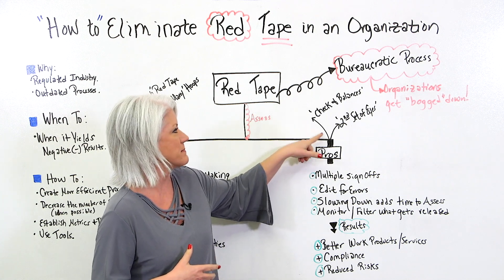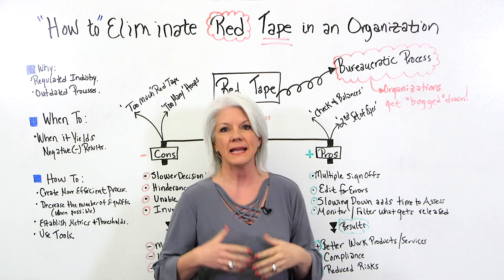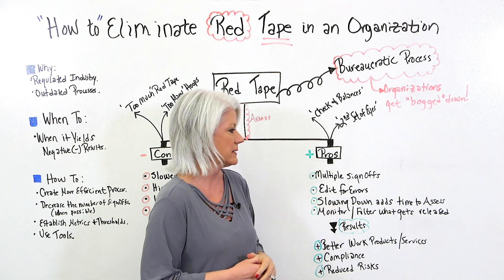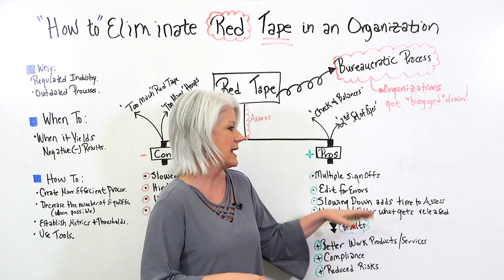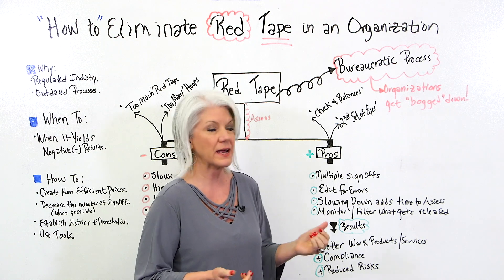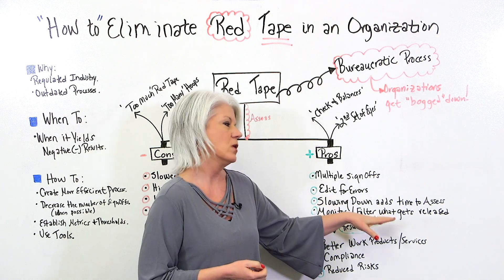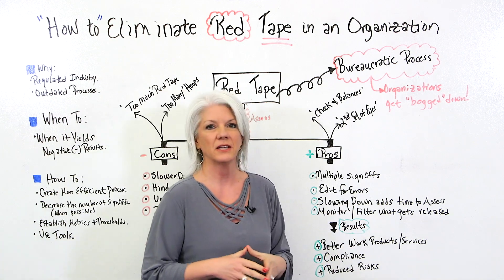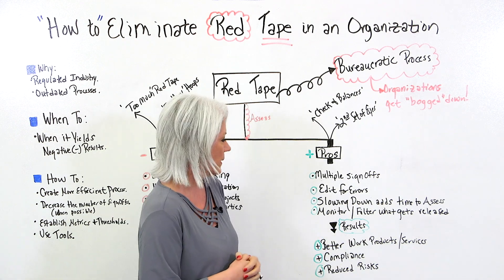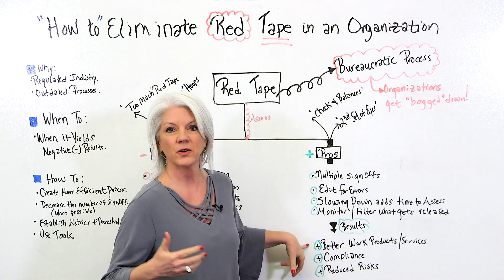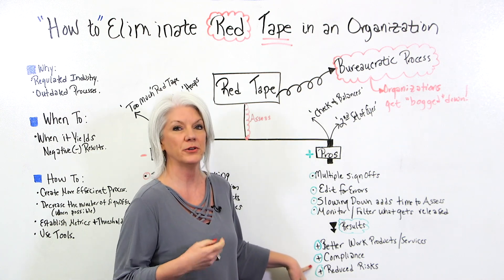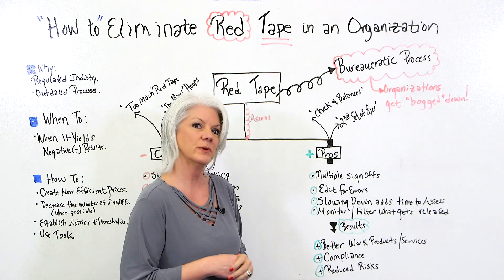When you have checks and balances and a second set of eyes, it allows for editing for errors, making sure there are no gaps or things that are missed. And by slowing down, it adds time and gives you more time to assess what's going on. It also allows you to monitor and filter what gets released — whether it's a press release, whether it's data — giving you time to make sure that's what you want going out. So the results are better work products or better services, tighter compliance to things you may be regulated on in your industry, and reduced risk.